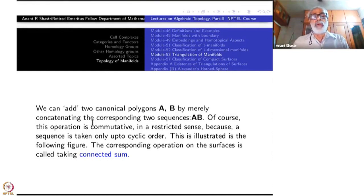Of course, this operation is commutative in a restricted sense. Namely, because of the cyclic order. See, a sequence is taken up to cyclic order. Therefore, A, B is the same thing as B, A. Only thing is, once you write A, B, you can't cut it in some other place and change over. That can be a problem. Every time you change, you have to do only cyclic order.